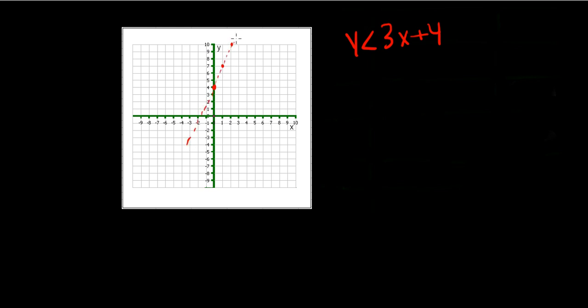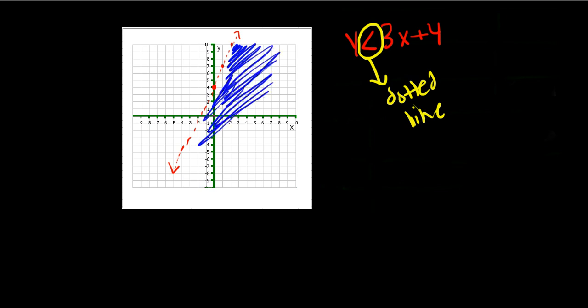Make sure it is a dotted line because of the less than symbol. If it was less than or equal to, it would be a solid line. Whenever it's just less than or greater than, it's a dotted line. If it's less than or equal to or greater than or equal to, it is a solid line. Because it says y is less than 3x plus 4, we have to shade the area that correlates to this. The inequality is less, so we shade below the line. That's how you graph the inequality y is less than 3x plus 4.